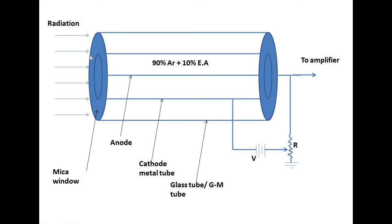One end of this tube is enclosed with thin mica sheets that acts as a window for radiation. A DC potential difference is applied between the cathode and anode — that is, between the metal tube and the wire. The voltage is adjusted below the breakdown voltage of the gas.